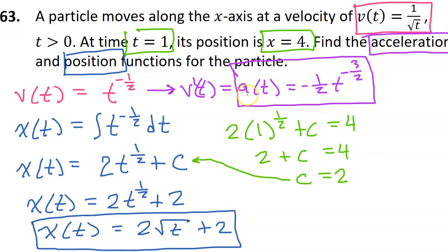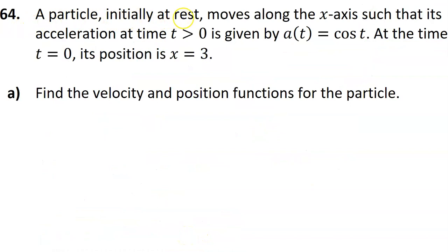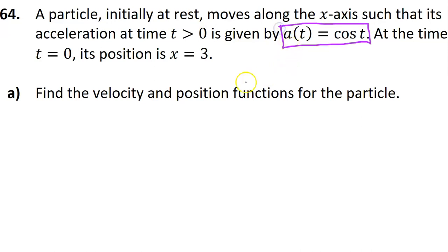So we were asked to find the acceleration function, which is here in purple, and the position function is here in blue. A particle initially at rest moves along the x-axis such that its acceleration at time t greater than 0 is given by a(t) equals cosine t. At the time t equals 0, its position is x equals 3. For part A of this problem, we need to find the velocity and position functions. They sort of snuck in a sneaky initial condition: the particle is initially at rest.